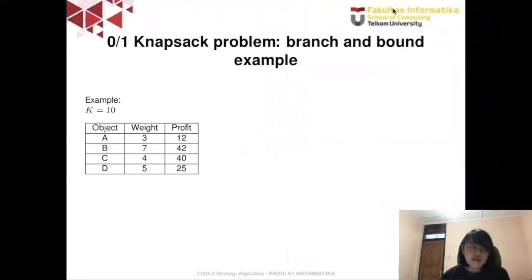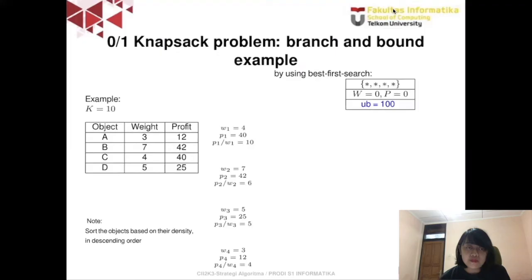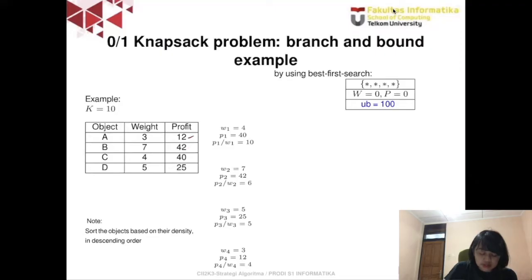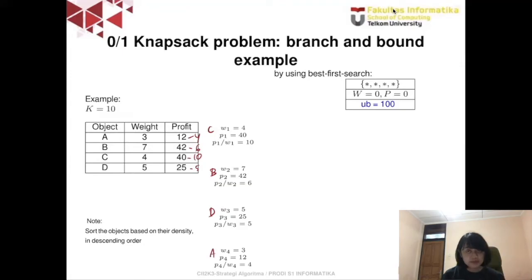For the example, we have 4 objects: A, B, C, and D, with a knapsack of maximum capacity 10. The first step is to sort the objects based on their density. The densities are 4, 6, 10, and 5 respectively. After sorting by density in descending order, the order becomes: item C first, then item B, then item D, and finally item A.